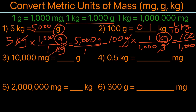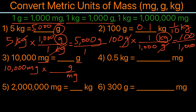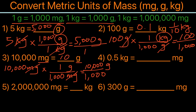For the third example, we have 10,000 milligrams converting to grams. We set up milligram in the denominator and gram in the numerator. Since 1 gram equals 1,000 milligrams, milligram crosses out, leaving 10,000 over 1,000, which equals 10 grams.